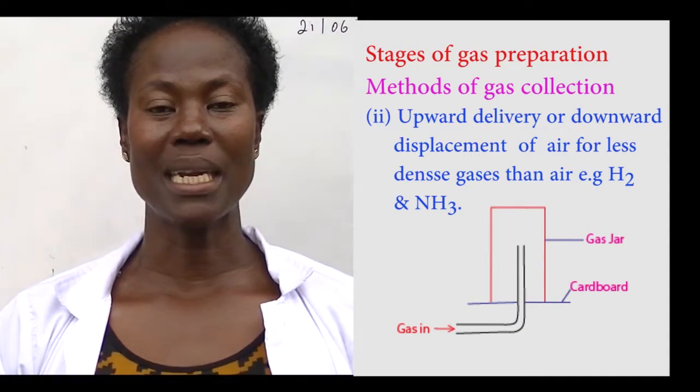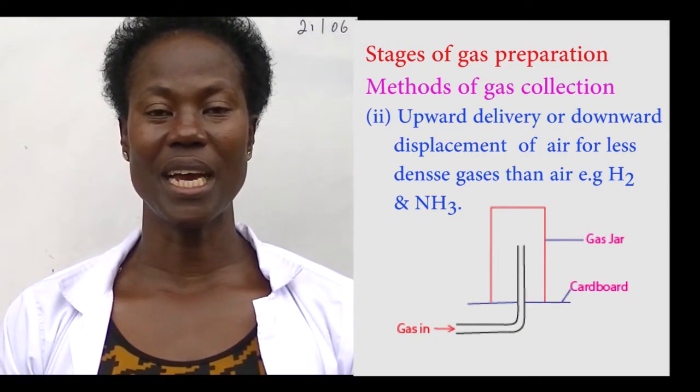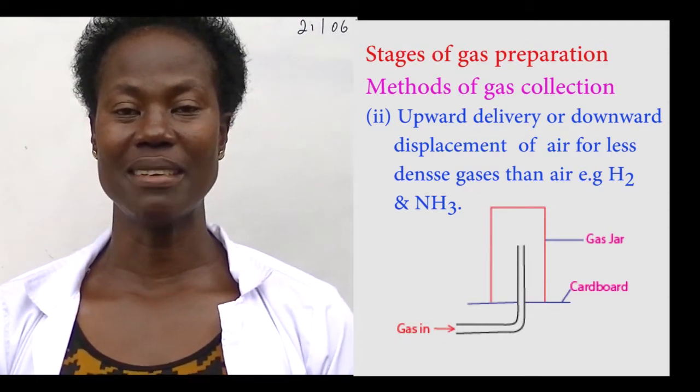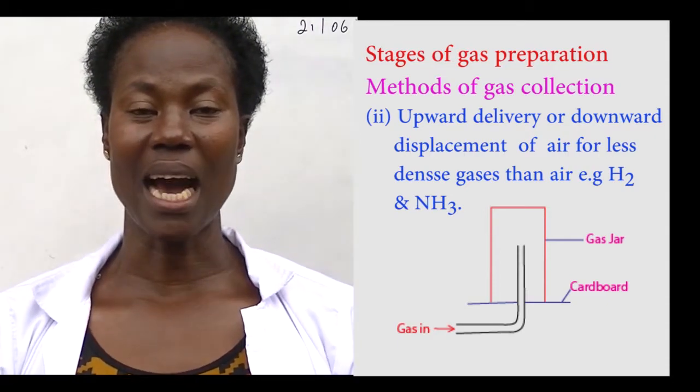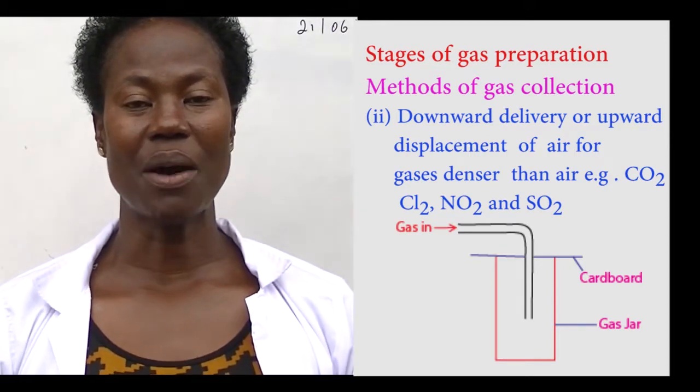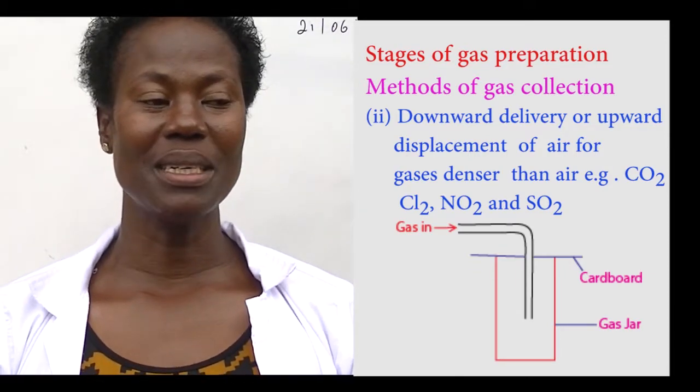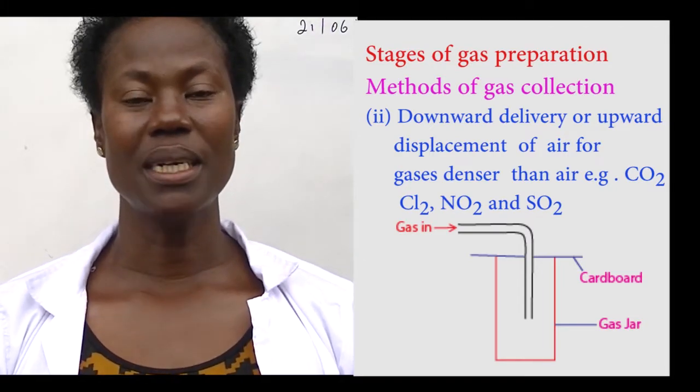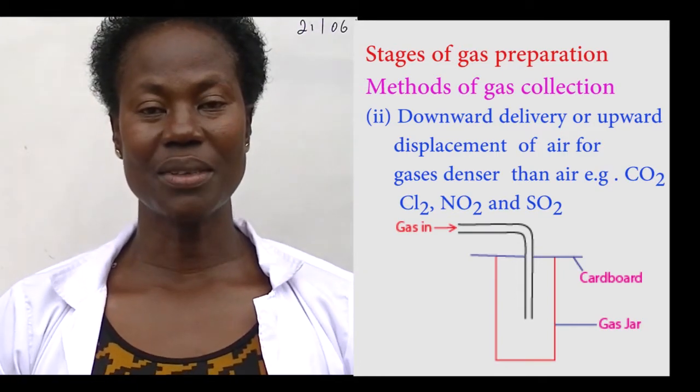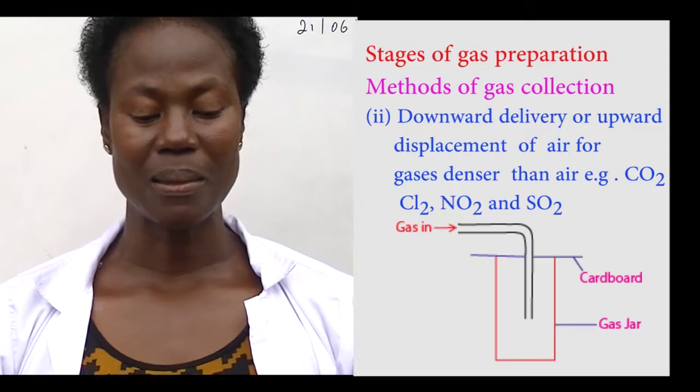Another method is upward delivery or downward displacement of air. This method is used for gases which are lighter than air or less dense than air. An example includes carbon dioxide, chlorine, nitrogen dioxide gas, and sulfur dioxide. Having understood the stages involved in laboratory preparation of gases we are now going to prepare oxygen.